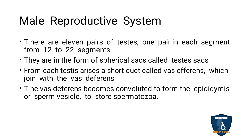The testes has a short duct called vas efferens, and this vas efferens is joined with the vas deferens. The vas deferens becomes convoluted to form the epididymis. The epididymis is the storage of spermatozoa and is also called a sperm vesicle.